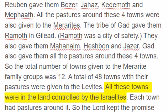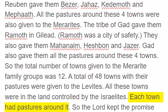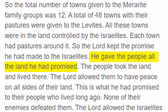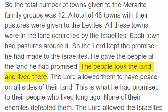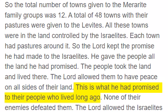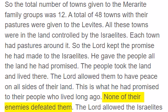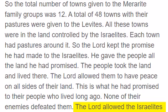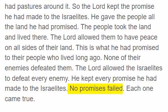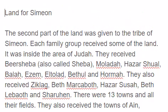A total of forty-eight towns with their pastures were given to the Levites. All these towns were in the land controlled by the Israelites. Each town had pastures around it. So the Lord kept the promise He had made to the Israelites. He gave the people all the land He had promised. The people took the land and lived there. The Lord allowed them to have peace on all sides of their land. This is what He had promised to their people who lived long ago. None of their enemies defeated them. The Lord allowed the Israelites to defeat every enemy. He kept every promise He had made to the Israelites. No promises failed.